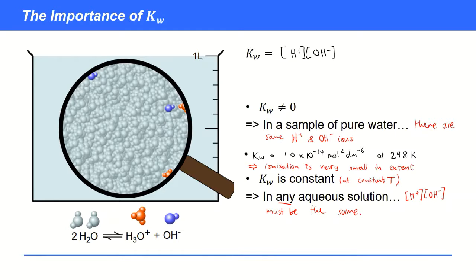That means that in any aqueous solution, the product H plus concentration times OH minus concentration must be the same. You can put your solution at any pH you want, throw in acids or alkalis. Fundamentally, this product remains constant. If you increase the concentration of H plus by adding an acidic molecule, you'll decrease the concentration of OH minus. If you do the reverse, you'll increase the OH minus concentration, but that means you've got to decrease the H plus concentration.